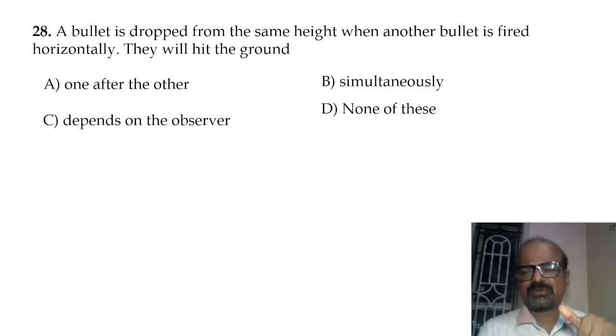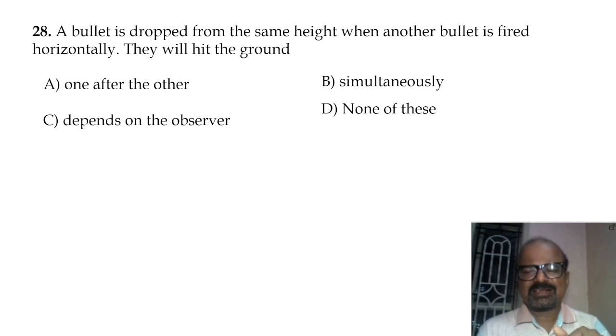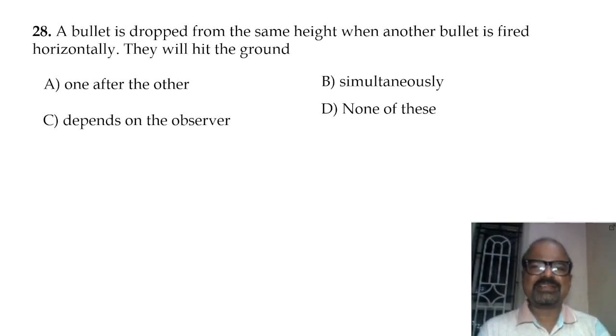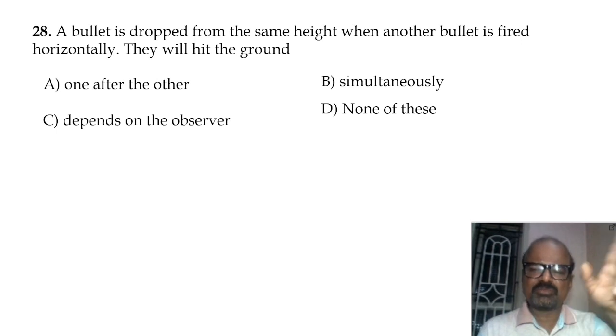The acceleration due to gravity is constant, so both bullets — the dropped one and the fired one — reach the ground simultaneously.